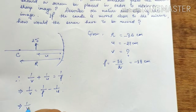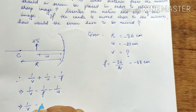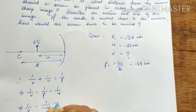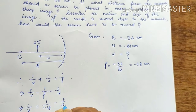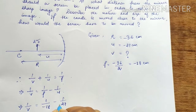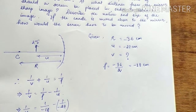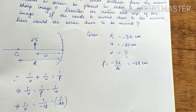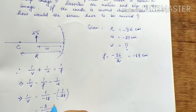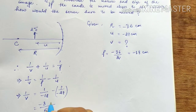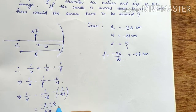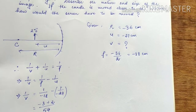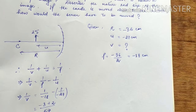Using 1/V = 1/F minus 1/U, we place the F and U values. U is minus 27 cm. Taking LCM gives minus 54, so we get the result.